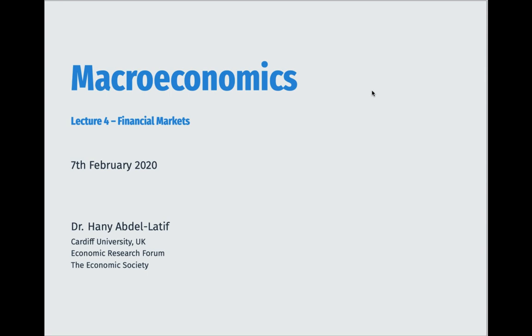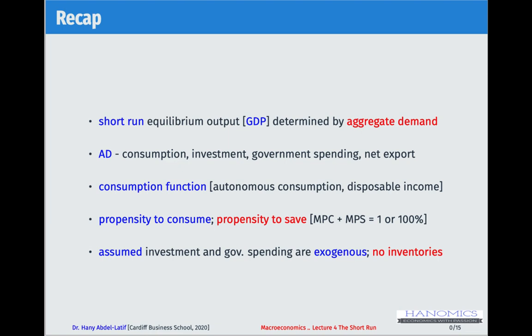Just as a reminder, we're still in the short run. In the short run, equilibrium output or equilibrium GDP is determined mainly by changes in aggregate demand or total demand. Last lecture we decomposed this aggregate demand into different components based on different economic agents.